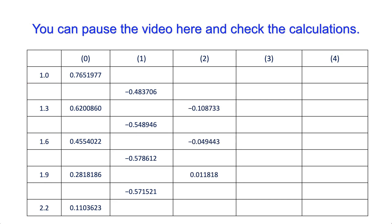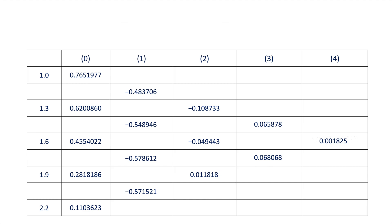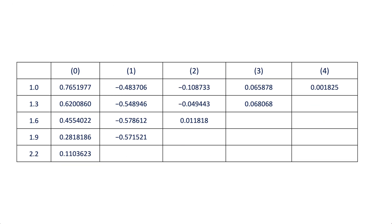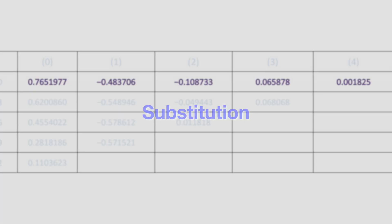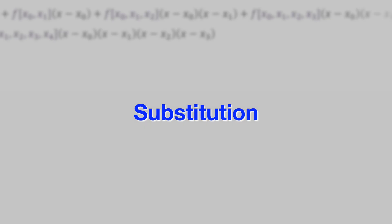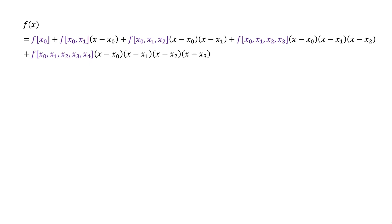We continue in the same way with column number three, and the final difference in column number four. Now we have our coefficients at the top of each column from zero to four, or that can be done also by using the compact form of the divided differences table. The next step is the substitution of the coefficients and the values of x from the given data set into the polynomial equation.